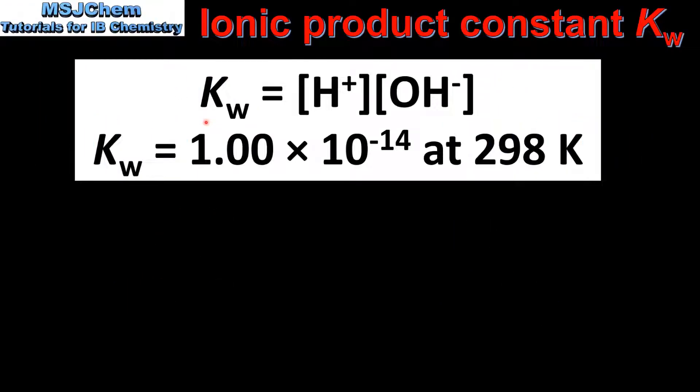In a previous video we saw that the ionic product constant of water, the Kw, is equal to the concentration of hydrogen ions multiplied by the concentration of hydroxide ions.